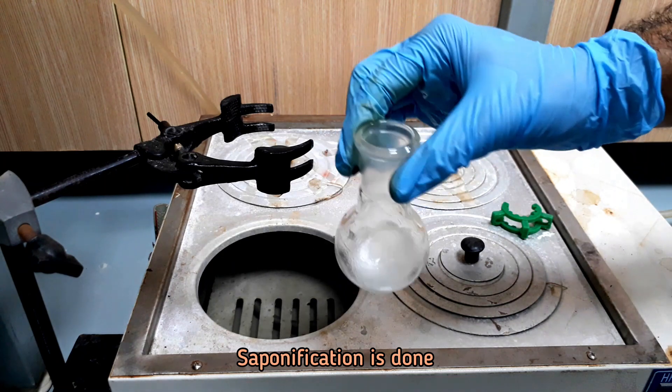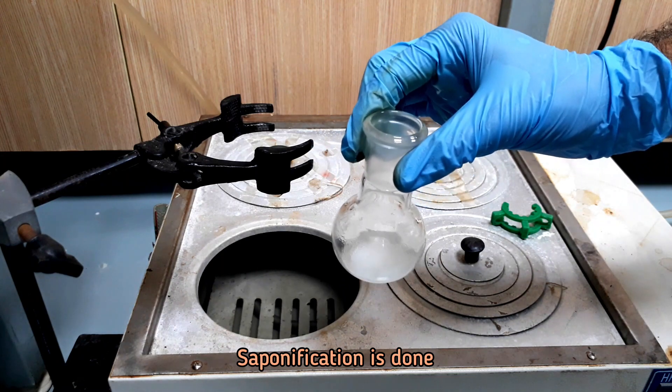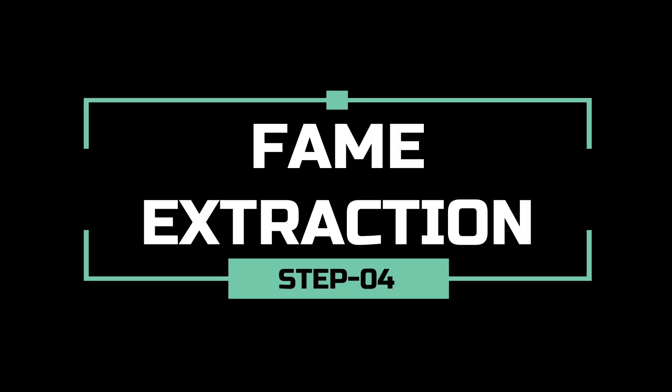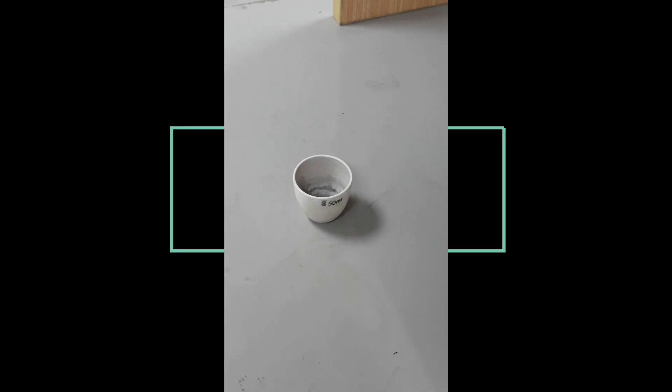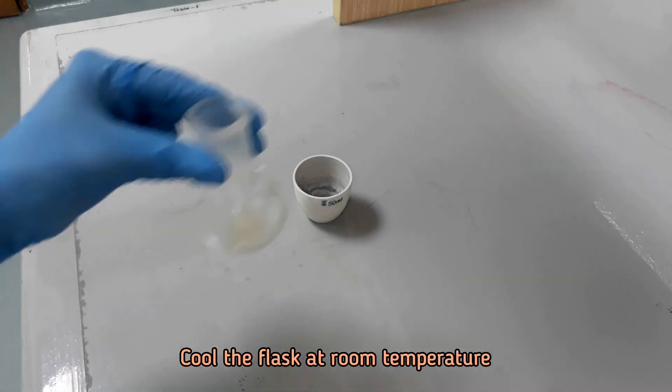Saponification is done, cool the flask at room temperature. In this step we will extract the fatty acid methyl ester content which was formed by acidic catalysis during the saponification of the oil sample.